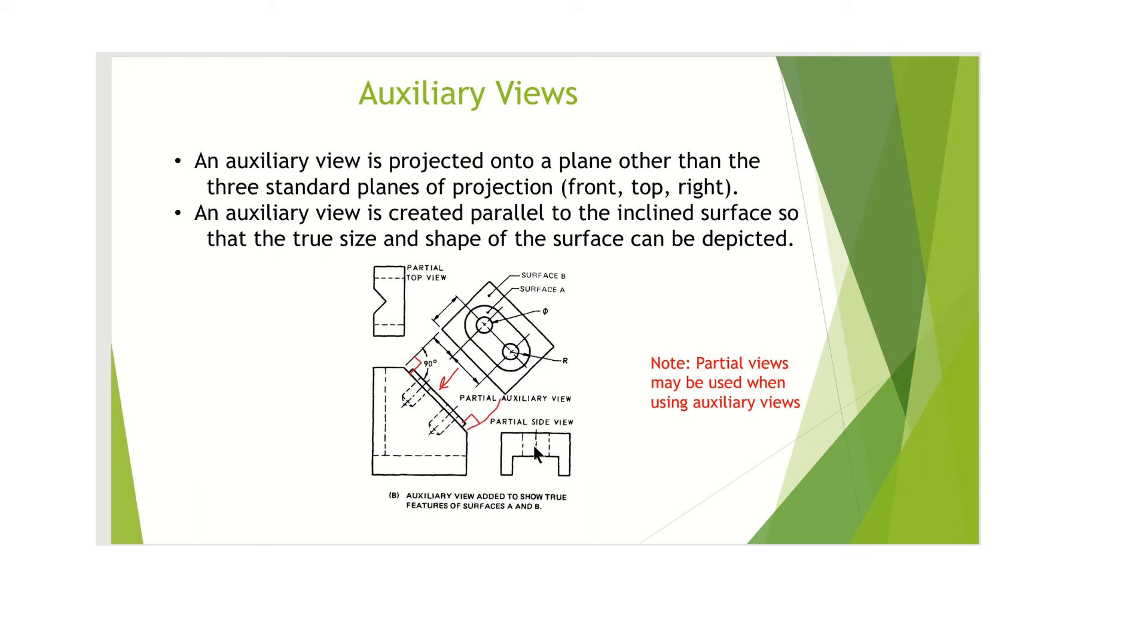Now what happens here a lot of times with auxiliaries, as we already talked about, there was a lot of distortion with this top part of this view, with the right side of this view. So they'll show partial views. Partial side view because this is correct—true size and shape because I'm perpendicular—and this is correct. Again because I'm perpendicular and these are showing important features. I need those views.